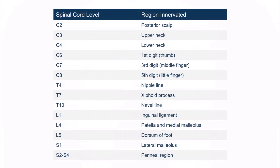This is a table of the spinal cord levels and their associated dermatomes. With regards to lumbar radiculopathy, we should focus on the information from L4 to S3. If the L4 nerve root was affected, patients would develop sensory deficits along the patella and medial malleolus. L5 corresponds to the dorsum of the foot, S1 to the lateral malleolus, and S2 through S4 to the perineal region.